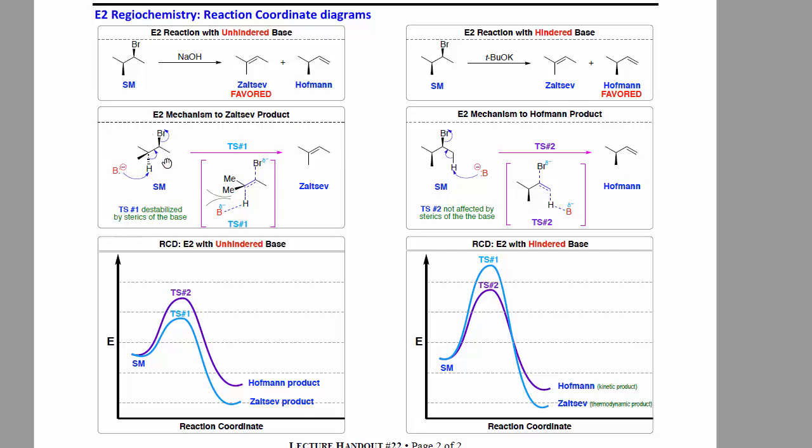So the idea is if you have a relatively hindered proton that you're trying to get to, a relatively hindered beta hydrogen that you're trying to get to to eliminate, then the transition state along the way is going to be influenced by sterics of the base.